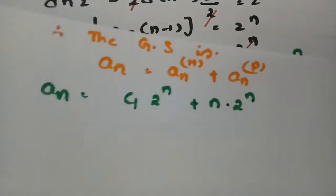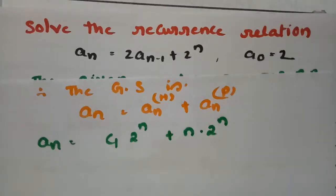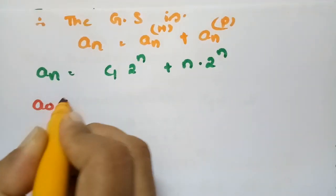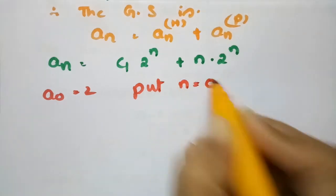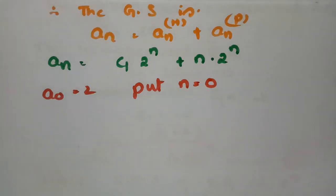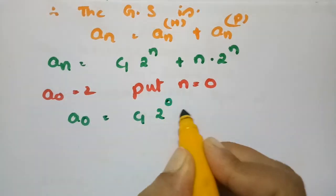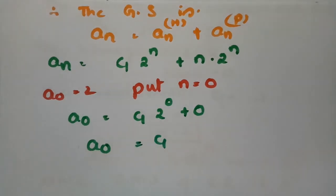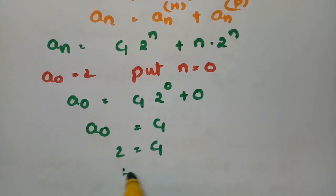We also have the initial condition a₀ = 2. Putting n = 0 into the general solution: a₀ = c₁·2⁰ + 0·2⁰ = c₁. Since a₀ = 2, we get c₁ = 2.